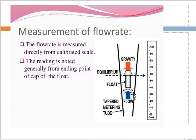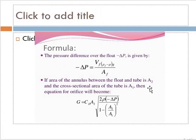The volumetric flow rate through the rotameter is given by: Q = Aw × C × √(2g · Vf · (ρf − ρw) / Af / ρw). From this equation we find out how much volume is going to pass through that tube. The pressure difference can also be found using this formula.